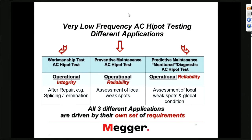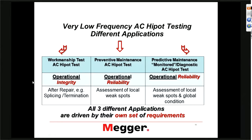When we look at very low frequency AC hypot testing, we have to recognize there are really three different applications, and when people talk about it we have to be clear what is meant. To the left, we have what we call the workmanship test — it tells you something about your operational integrity. That means I put a splice in, I test the cable, and I can be sure I can switch the cable in without the circuit basically blowing up.